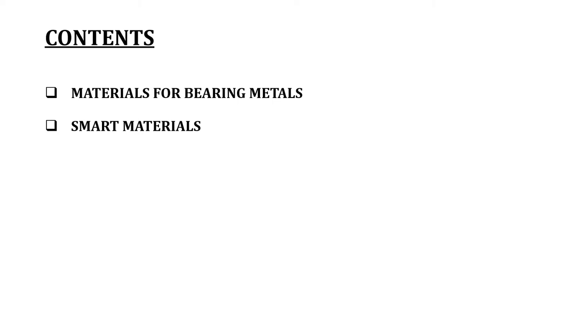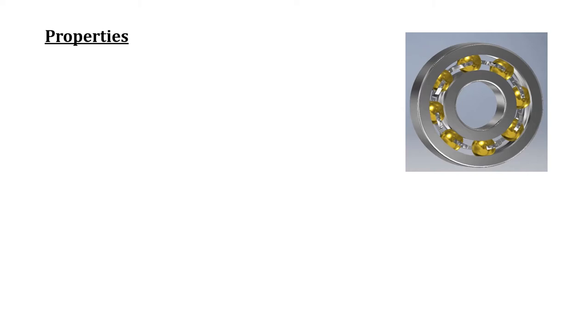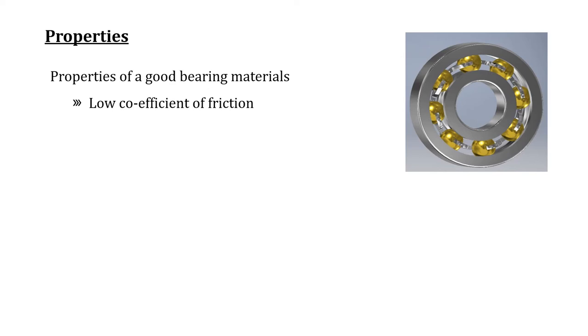In this lecture we will have discussion about materials for bearing metals and smart materials. A bearing is a machine element used to support rotating components like shafts and spindles so that it can transmit power or motion from one place to another. A good bearing material should have low coefficient of friction to improve machine efficiency and reduce power loss, and high resistance to wear so that it does not wear out.